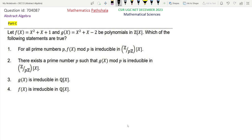Look at option 1 first. For all prime numbers p, f(x) mod p is irreducible in Z/pZ[x], that is Zp[x]. This is for polynomial f(x), f(x) = x² + x + 1.